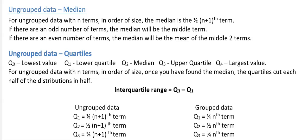We have ungrouped data and grouped data. For ungrouped data, say you have n = 9, so you have nine values. Once you order them — that's important — you define your lower quartile as (n+1) × (1/4), which is 10 × (1/4) = 2.5. So the lower quartile would be the 2.5th value — it's not the number 2.5, it's the 2.5th value.